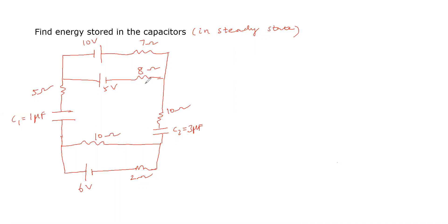In steady state, no current flows through the capacitor branches. Now we identify two loops in the circuit and consider each loop separately.